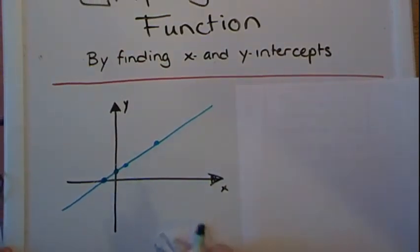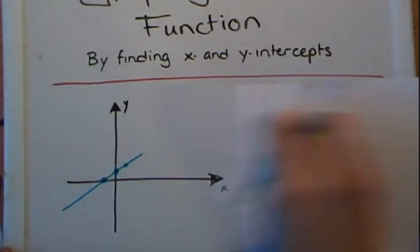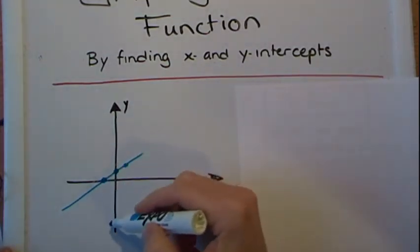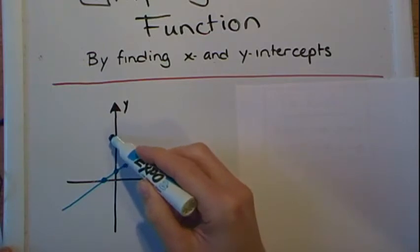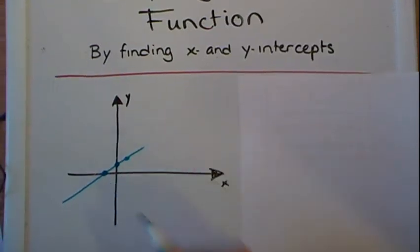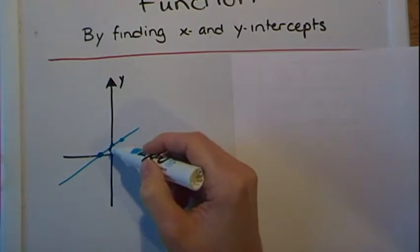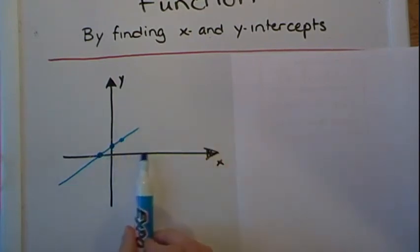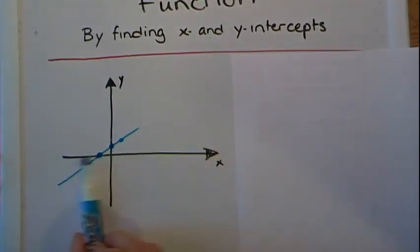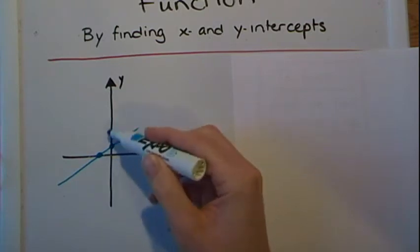So how do we do this? Well, remember that all along the y axis the x coordinate is zero because we haven't moved anywhere to the right or anywhere to the left. So the x coordinate is always zero.